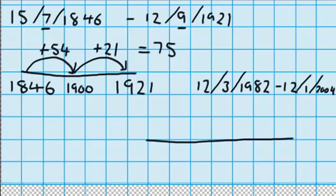And just like we've done before, I'm going to solve that using a number line. I'll write 2004 on here, and 1982.